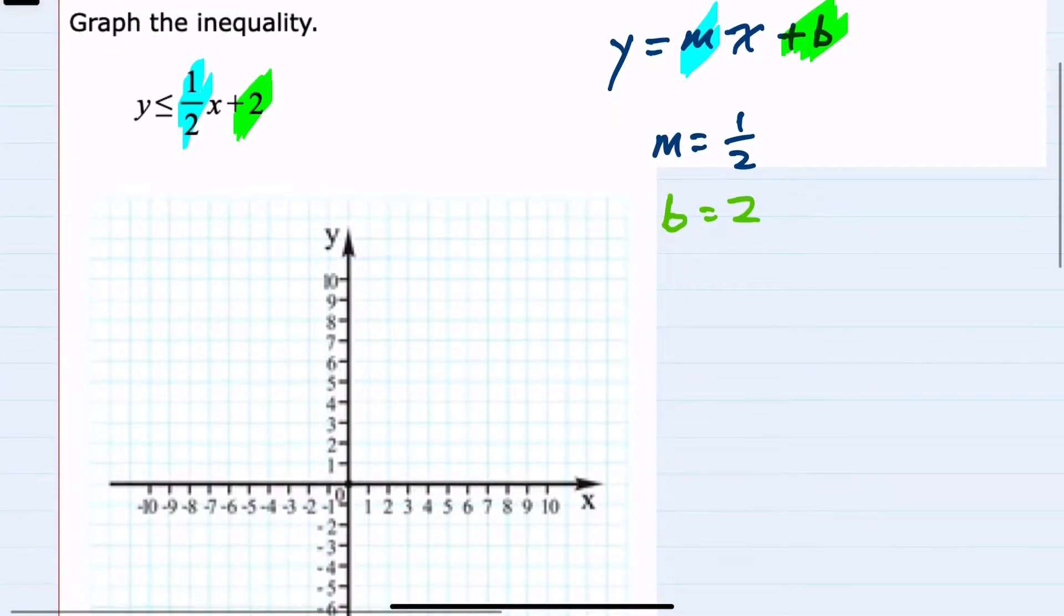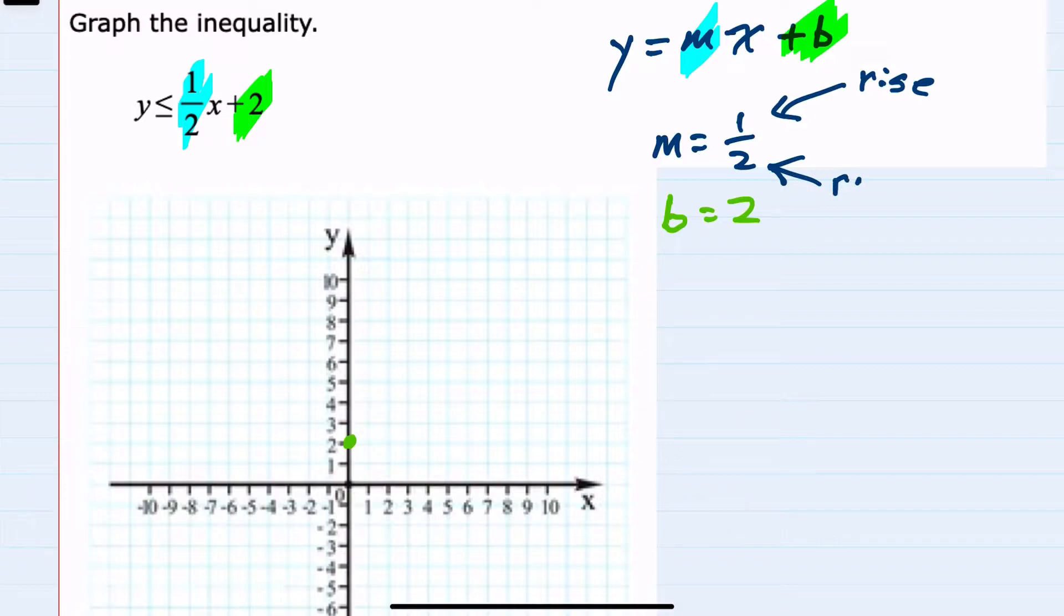When graphing, I can start with the intercept. The y-intercept is positive two. And from there, my slope is one-half, so that's a rise of one and a run of two. From that y-intercept, I would go up one unit and then over two units. That would be a second point. From any point, I could continue to go up one and over two to get another point on this line.